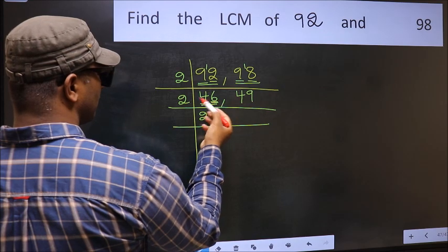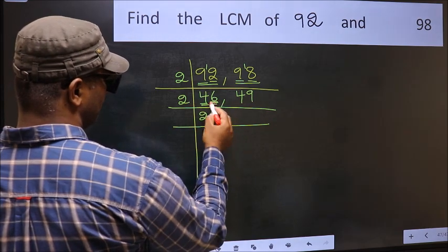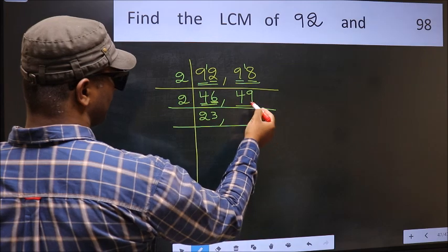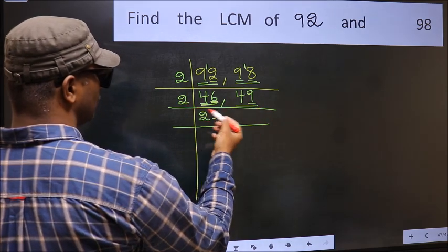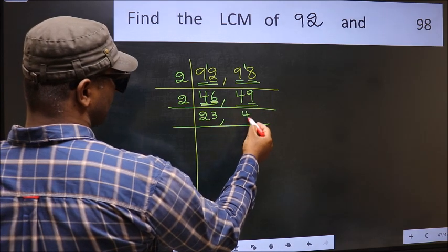The other number is 6. When do we get 6 in 2 table? 2 times 3 equals 6. The other number 49. Last digit 9 is not even, so this is not divisible by 2. So you write it down as it is.